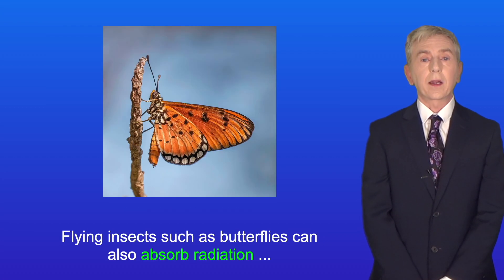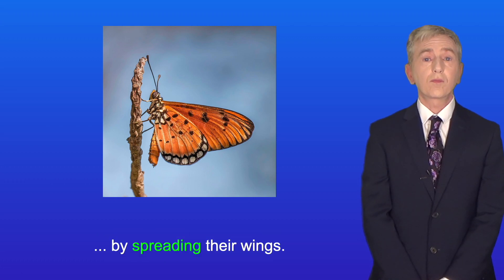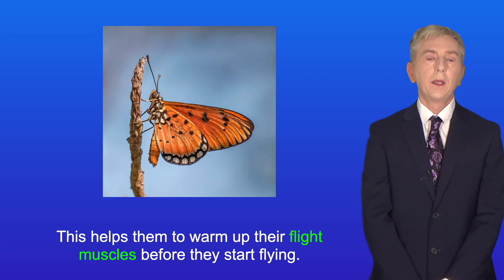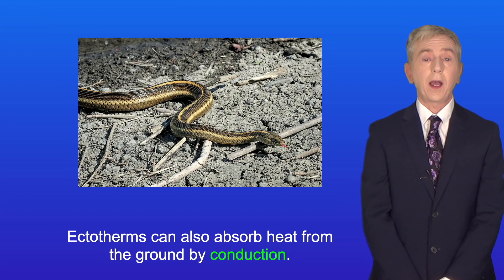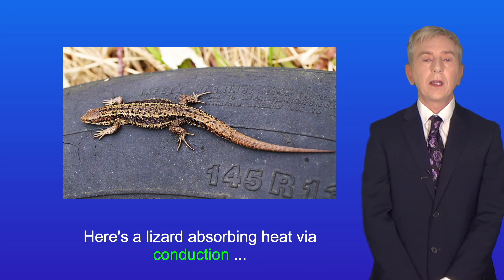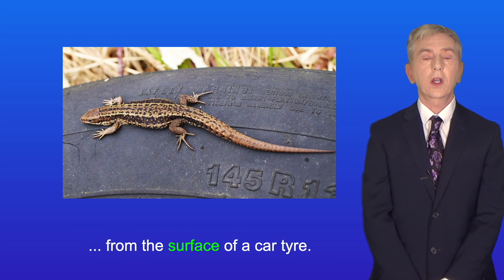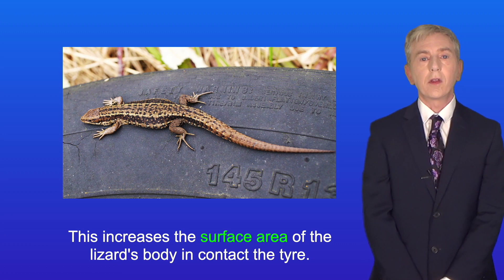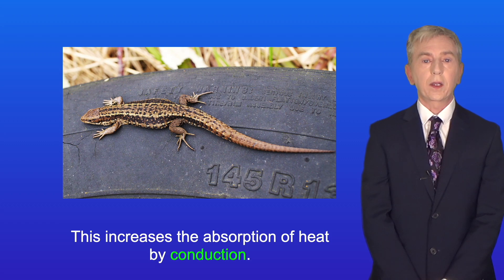Flying insects such as butterflies can also absorb radiation by spreading their wings, which helps them warm up their flight muscles before they start flying. Ectotherms can also absorb heat from the ground by conduction. For example, a snake will absorb heat via the lower surface of its body. Here's a lizard absorbing heat via conduction from the surface of a car tire — notice how the lizard is pressing flat against the tire. This increases the surface area of the lizard's body in contact with the tire, which increases the absorption of heat by conduction.